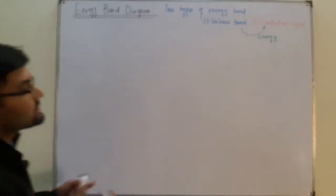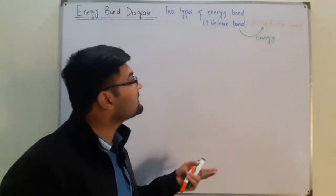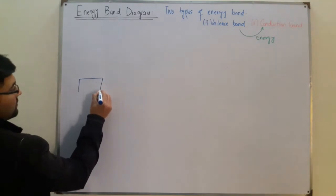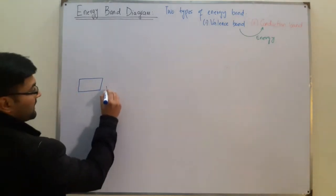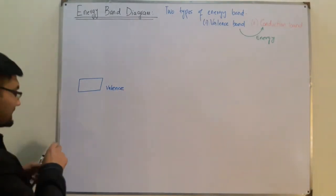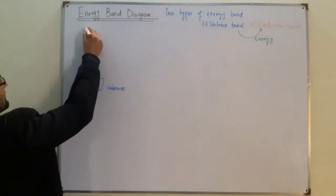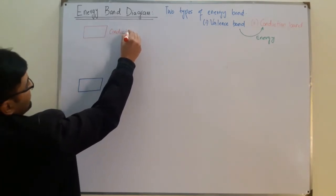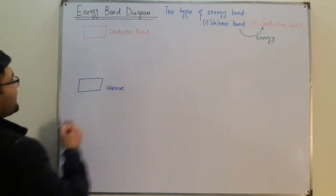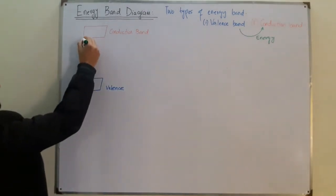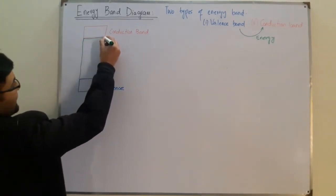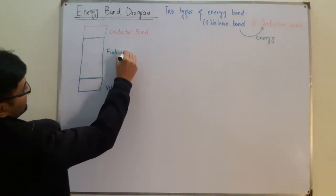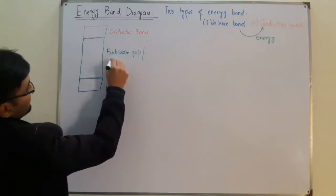To transfer from the valence band to the conduction band, we must give energy to the electron. The energy required is represented by the forbidden gap. In the diagram, the valence band is shown in blue at a lower energy level, the conduction band in red at a higher energy level, and the forbidden gap — also called the energy band gap — is shown in green in between.